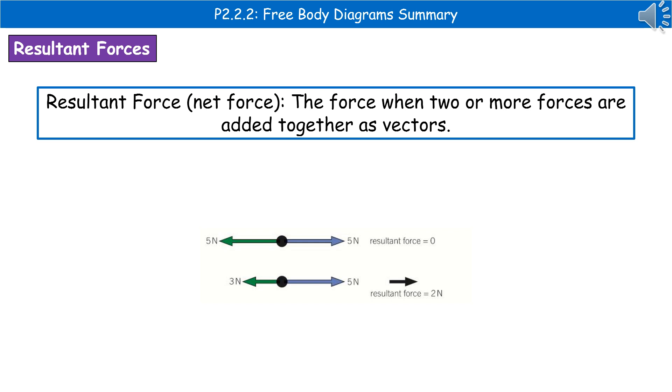The one just beneath with three newtons to the left and five newtons to the right, we'd have a resultant force of two newtons to the right, because when we add them together, the three is negative, the five is positive, so we have a two newton resultant force.